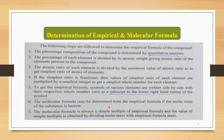The molecular formula may be determined from the empirical formula if the molar mass of the substance is known. The molecular formula is always a simple multiple of the empirical formula, and the value of the simple multiple is obtained by dividing molar mass by empirical formula mass. We can determine the empirical and molecular formula by following these steps.